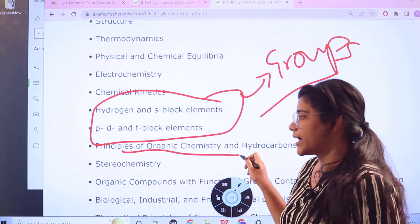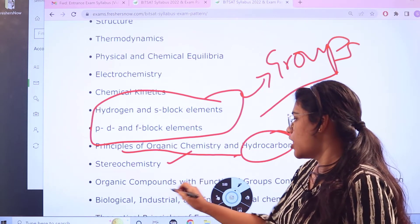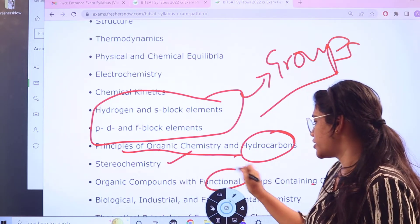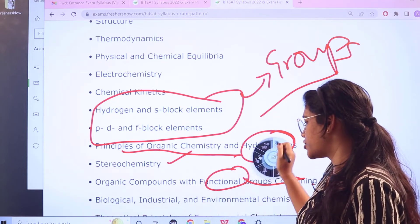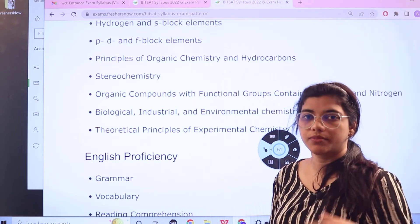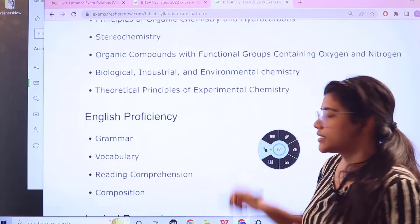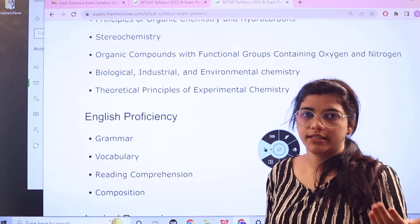What are the principles of organic and inorganic chemistry and hydrocarbons, stereochemistry, organic compounds which is related to the functional groupings, biological and industrial and environmental chemistry. Then you have theoretical principles which are experimental, which are used in the experimental chemistry or which are of the experimental chemistry.